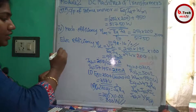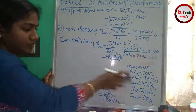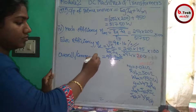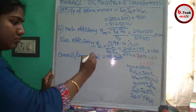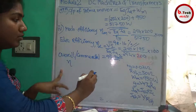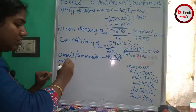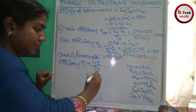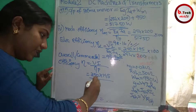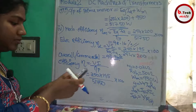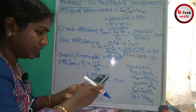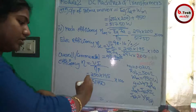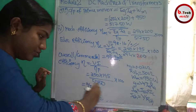Finally, overall or commercial efficiency η = VI / mechanical input power = 250 × 195 / 51750 × 100%. Calculating: 48750 / 51750 × 100 = 94.20%.